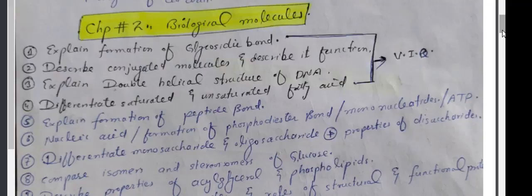Differentiate between monosaccharides and oligosaccharides. Properties of disaccharides. Compare isomers and stereoisomers of glucose. Describe properties of acyl, glycerol and phospholipids. Classify proteins. List examples and rules of structural and functional proteins.